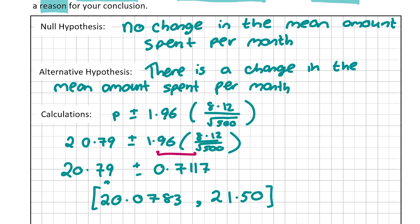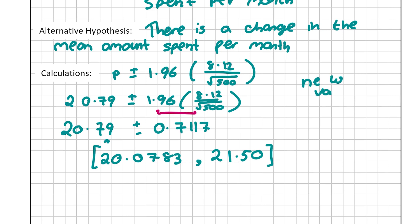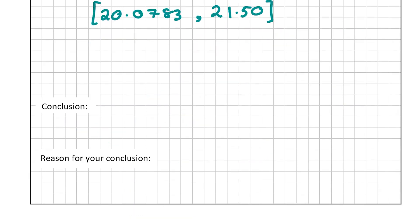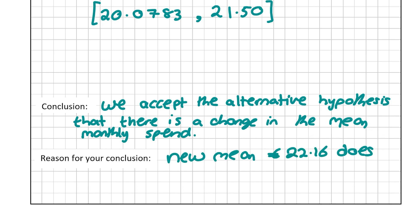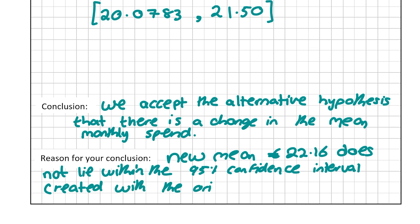We can see that the new value of 22.16 does not lie within the 95% confidence interval of (20.0783, 21.5017). Therefore we accept the alternative hypothesis: there is a change in the mean monthly spend. The reason is that the new mean of 22.16 does not lie within the 95% confidence interval created from the original mean. This question is worth 15 marks and that concludes the video — thanks very much for watching and I'll see you in the next one.